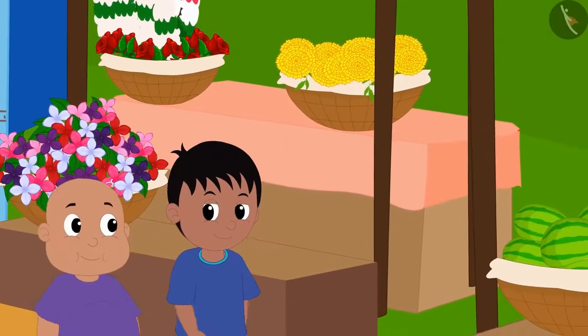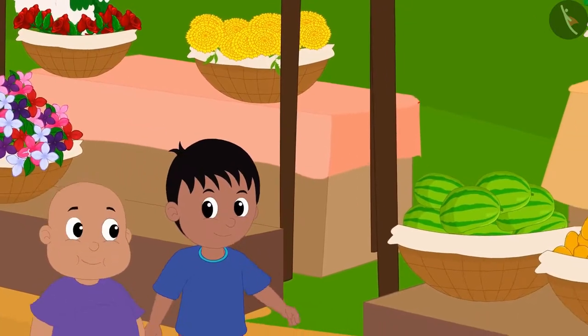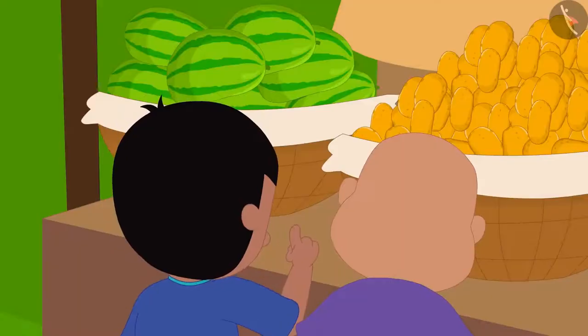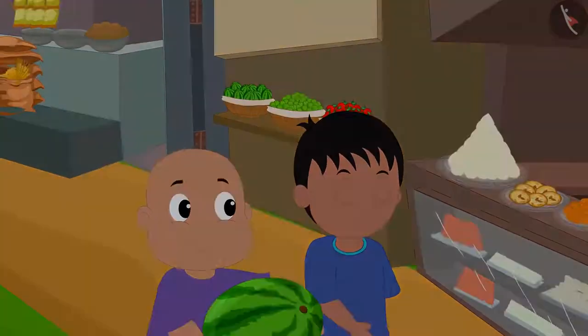Raju and Bablu are going to buy watermelon from the market. They bought a watermelon from Bunni's stall and took it to Raju's house.